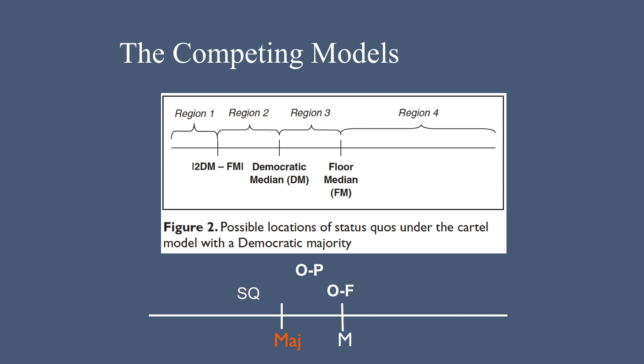The policy ends up at that point marked OP because that is the point that makes the median member of the majority party indifferent. Note that the distance between SQ and MAJ is the same as the distance between MAJ and OP.